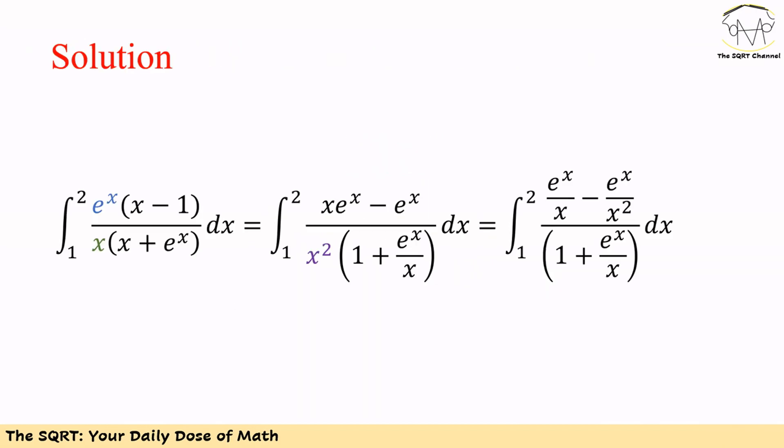To solve this problem, let's start by applying some simplifications. For the numerator we have e^x times (x minus 1), and for the denominator we have x times (x plus e^x). We are going to multiply e^x into each term in the numerator. For the denominator we are going to factor out x squared from both terms, so we end up with e^x times x minus e^x for the numerator, and x squared times (1 plus e^x over x) for the denominator.